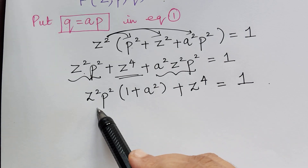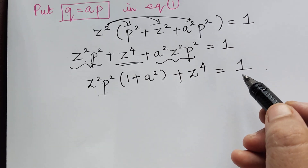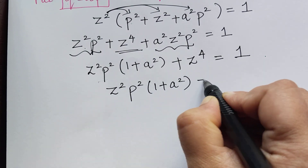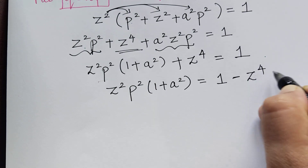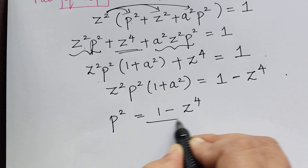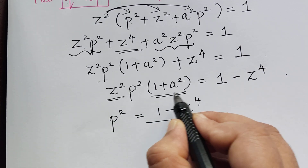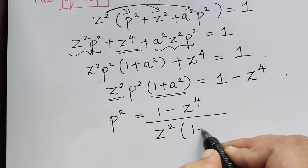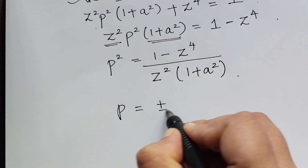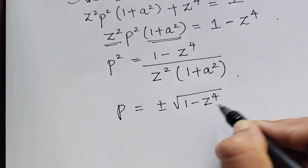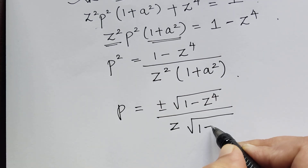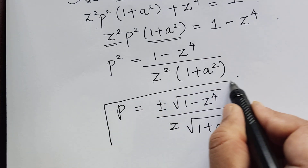All we need is the value of p, so take z to the power 4 to the right. We get z squared p squared multiplied with 1 plus a squared, equal to 1 minus z to the power 4. So the value of p squared is 1 minus z to the power 4, divided by z squared multiplied with 1 plus a squared. Therefore, p is equal to plus or minus square root of 1 minus z to the power 4, divided by z times square root of 1 plus a squared.